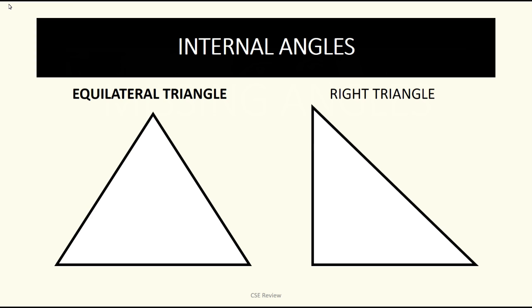First thing is internal angles. Ano ba ibig sabihin ng internal angles? By the word internal, ibig sabihin ng in nasa loob. Ang ibig sabihin ng internal angles are the angles na nasa in or nasa loob ng isang shape. Ano ibig sabihin nun? Those are these angles. You have this one, this one, and this one in the case of an equilateral triangle.